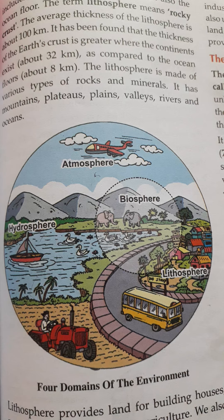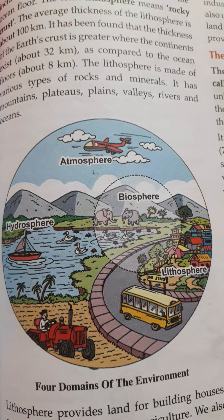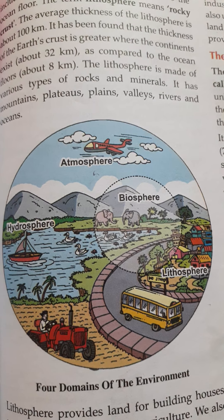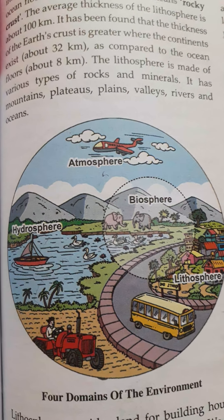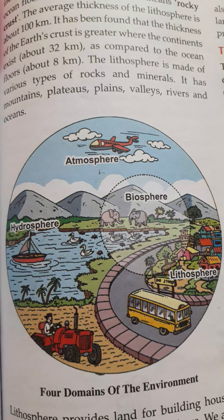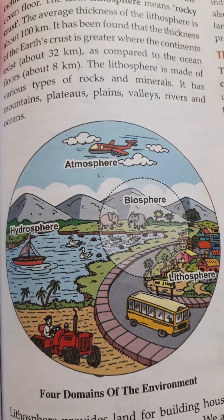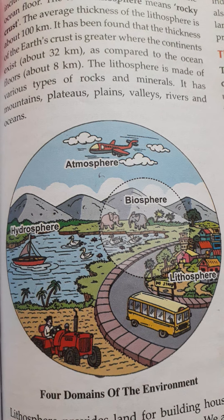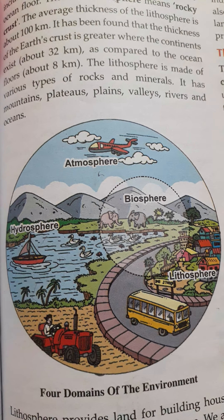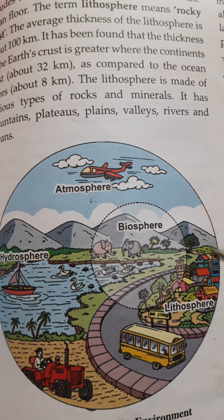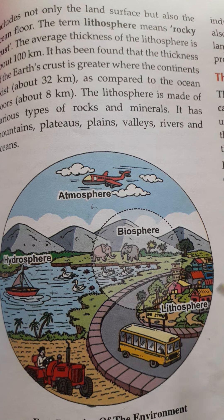The atmosphere also protects us from harmful sun rays, such as ultraviolet rays, which can cause cancer and cataract disease. At the same time, the atmosphere controls temperature during day and night, and also controls pressure, humidity, and sunshine. Therefore, the atmosphere helps us in changes of weather and climate.